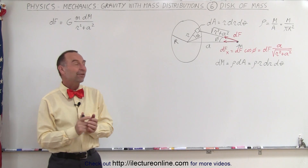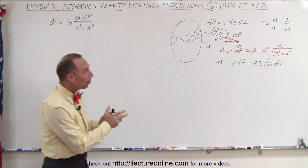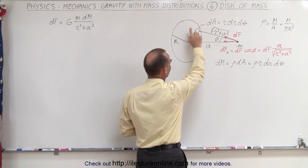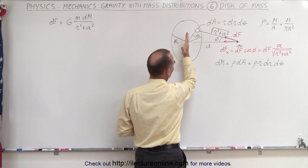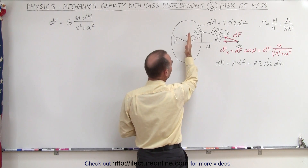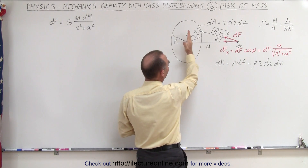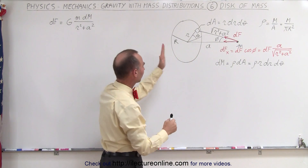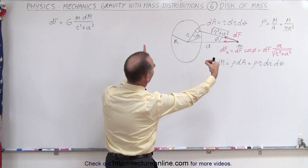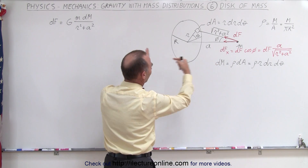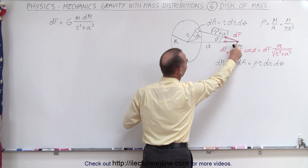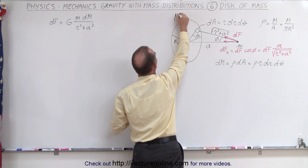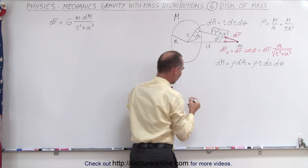Welcome to our lecture online. In this video we're going to calculate the force between a small mass m and a disc. This disc is flat, has mass, and is turned perpendicular so that the normal vector to the area of the disc points directly to the mass. We're going to call the mass of the big disc big M, and the mass of the small mass small m.